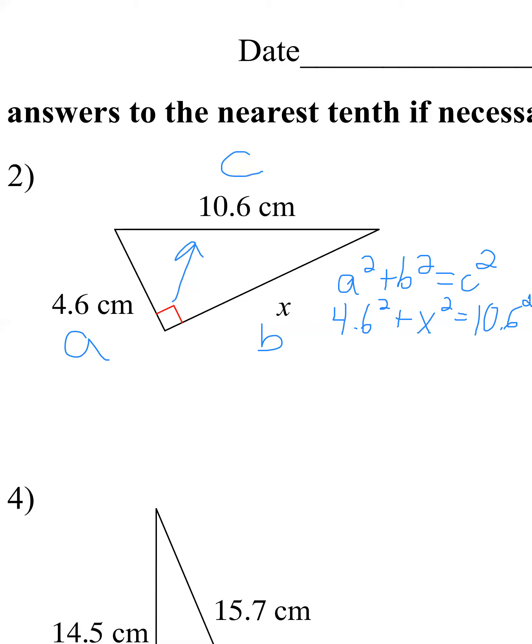I'll ask my calculator to do the squaring for me. So I need to do 4.6², which gets me 21.16. x² is just going to stay, and then 10.6² is 112.36. Now I have this quadratic equation that I want to get solved. Let's get the x² by itself, so we'll subtract the 21.16.